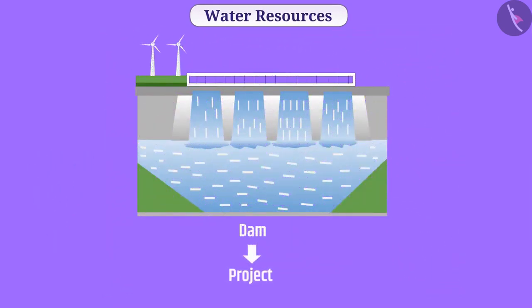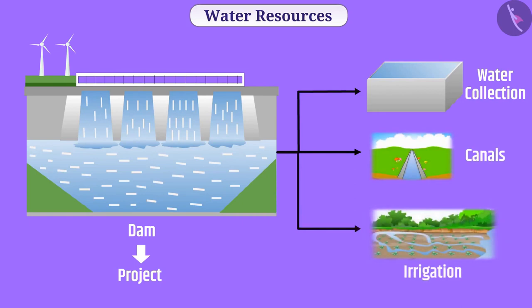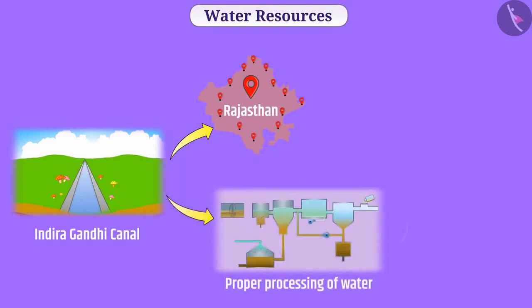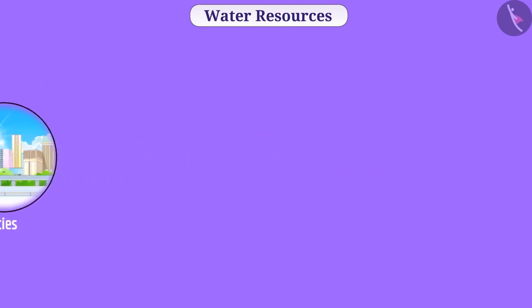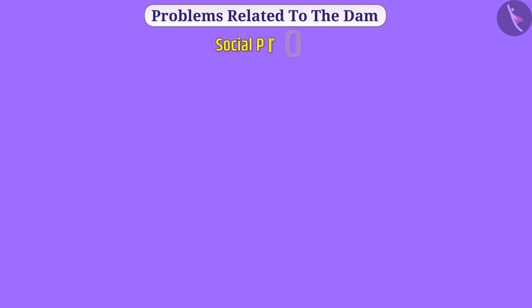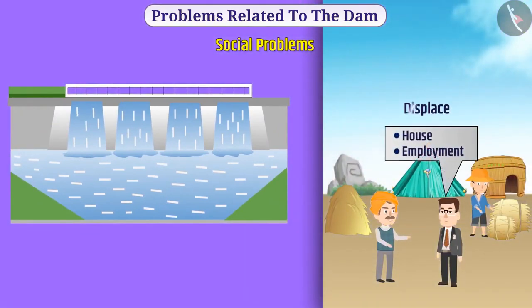Dams are important projects for water conservation. There are many benefits of building large dams: sufficient water can be stored, water can be carried with canals for irrigation — for example, the Indira Gandhi Canal has transported water to many places in Rajasthan — water can be processed and transported to cities via pipelines, and dam water is also used to generate electricity. However, there are social problems: large numbers of farmers and tribals are displaced, and promises made while displacing them are often not fulfilled.